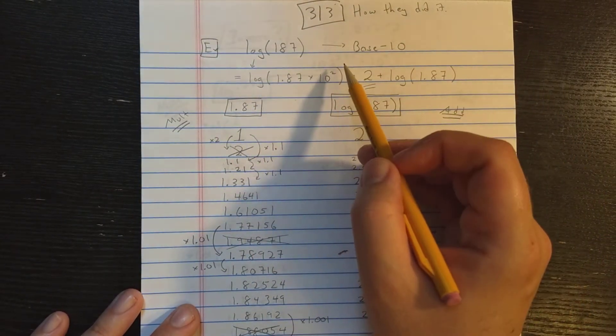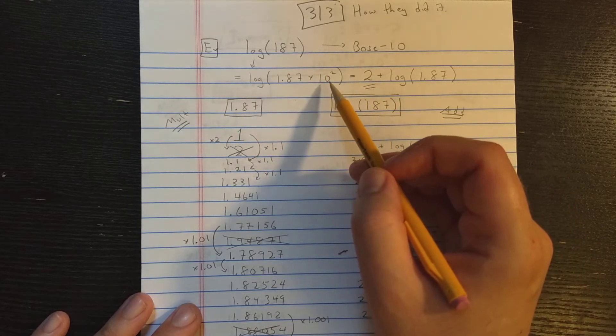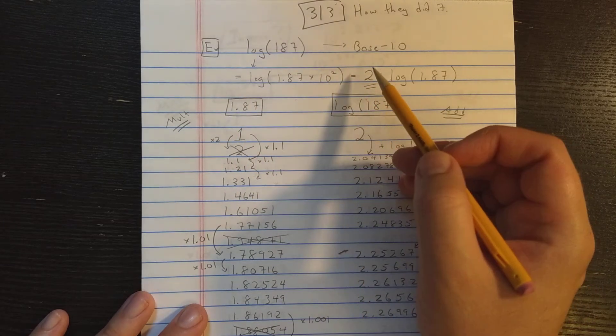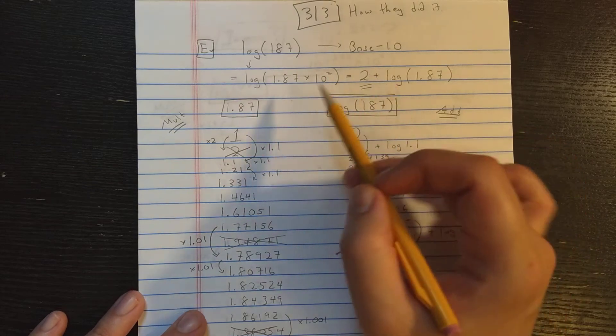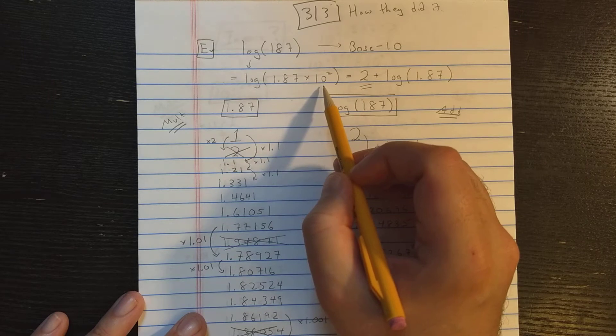So in base 10, first let's assume that our calculator is using BCD, binary coded decimal, and it's also storing the number in scientific notation essentially, so it's storing the number as 1.87 times 10 to the 2.